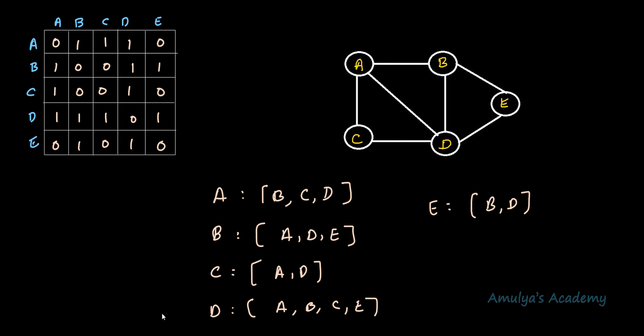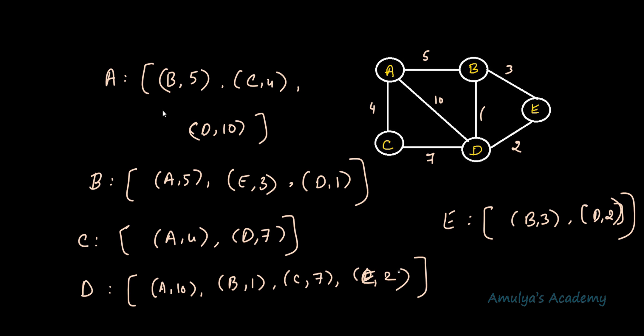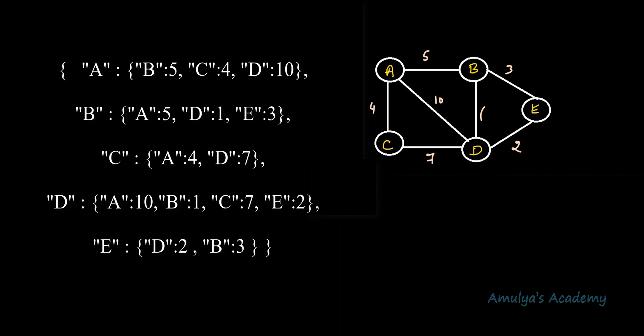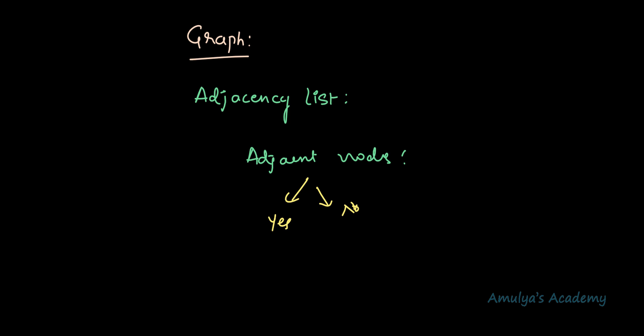Now if I want to represent a graph using an adjacency list in Python, we can use a dictionary, where the nodes are the keys and the adjacent node lists are the values. For a weighted graph, you can represent it as a list of lists, or you can use a dictionary as well. Alright, this is about the adjacency list and in the next tutorial we will talk about the different operations we can perform on a graph. Thank you for watching — don't forget to subscribe.